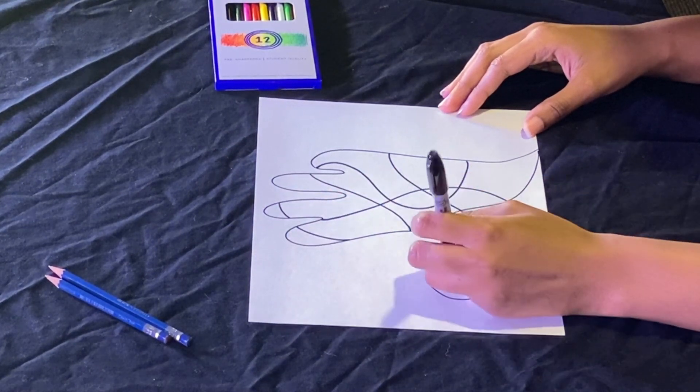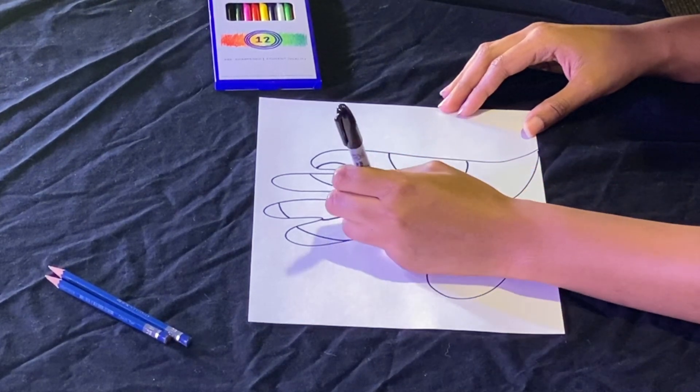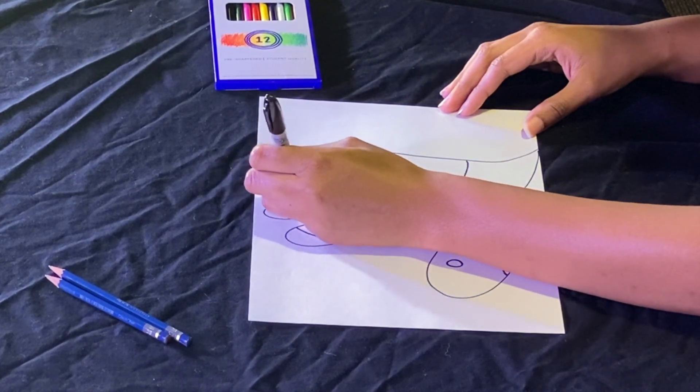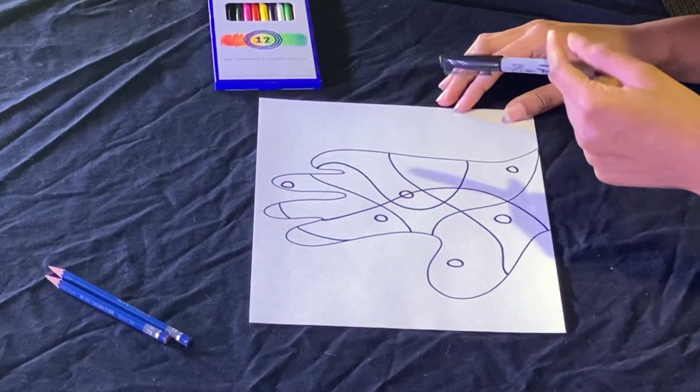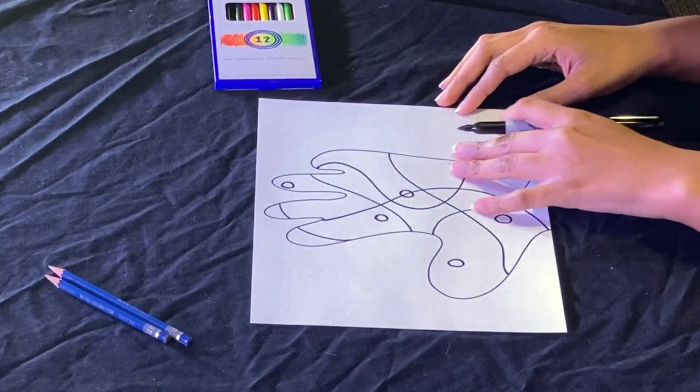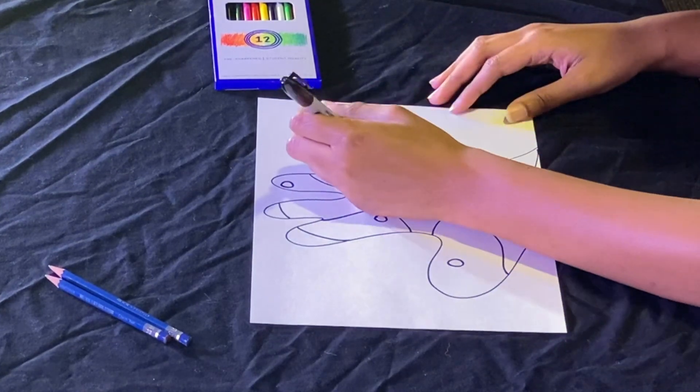I'm also going to add some circles in here. Add some more of a pattern. And if you want to draw outside of your shape, outside of your hand shape, your triangle circle, whatever you decided to do, you can do that too.